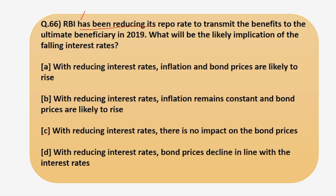The question says RBI has been reducing its repo rate to transmit the benefits to the ultimate beneficiary. In 2019, what will be the likely implication of the falling interest rates? Before discussing the answer, let's first understand the question. Since 2019, RBI has been reducing its repo rate in the fifth bi-monthly policy as well, so as to benefit the ultimate beneficiary and stimulate the economy. With these falling interest rates, what will be the likely implication? Assume all other factors affecting inflation and bond prices are constant.